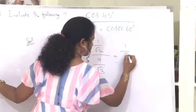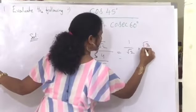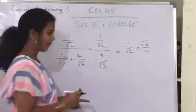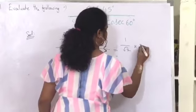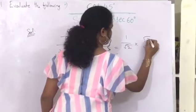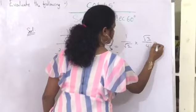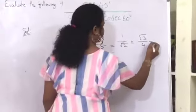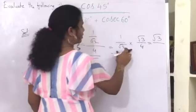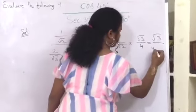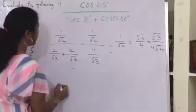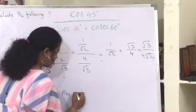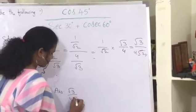Taking the reciprocal of the denominator fraction, we get 1 by root 2 multiplied by root 3 by 4. This gives 1 into root 3 equals root 3, and root 2 into 4 gives 4 root 2. Therefore the answer is root 3 by 4 root 2.